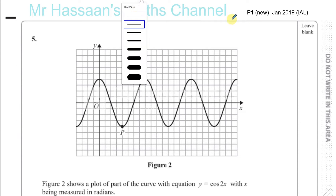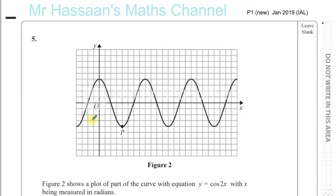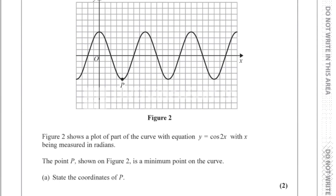A couple of my students took this actual exam, and in June one of them got 100% UMS but he got 71 out of 75. This is one of the questions where he lost a mark, and it was a bit surprising that he lost the mark — I'll show you why.